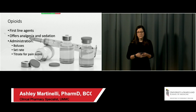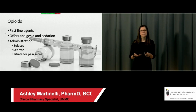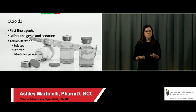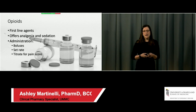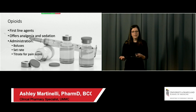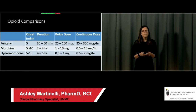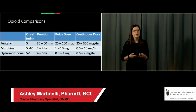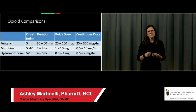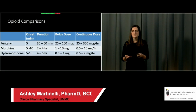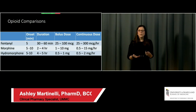Opioids are our first-line agents to manage acute pain — they offer analgesia and mild sedation. We'll bolus these drugs upfront; a rate is only needed if the patient is failing multiple boluses. The most common opioids are fentanyl, morphine, and hydromorphone, all with rapid IV onset. Fentanyl common bolus doses range from 25–100 micrograms; approximately 1 mcg/kg or slightly less is a reasonable starting dose.